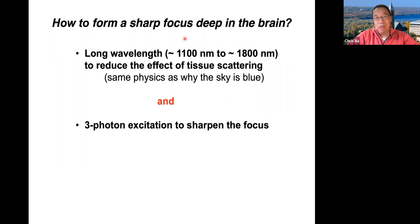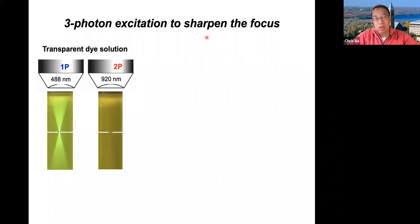How do you form a sharp focus deep in the brain? We use long wavelengths — around 1100 nanometers to about 1800 nanometers — to reduce the effect of tissue scattering. The physics is really the same as why the sky is blue and the sunset is red. We also use three-photon excitation to sharpen the focus.